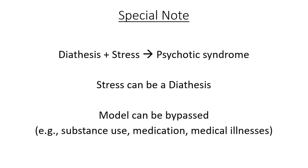It is important to note that while the stress-diathesis model reflects the pathogenesis of enduring psychotic illness, there are some nuances to consider. First, stress can be a diathesis in and of itself. Also, this model can be bypassed by some circumstances such as substance use, medication side effects, and certain medical illnesses. For example, the psychosis generated from acute intoxication from hallucinogens does not necessarily imply underlying neurobiological disconnectivity.